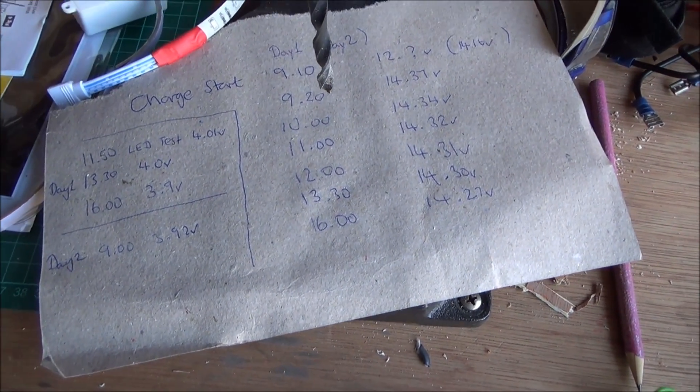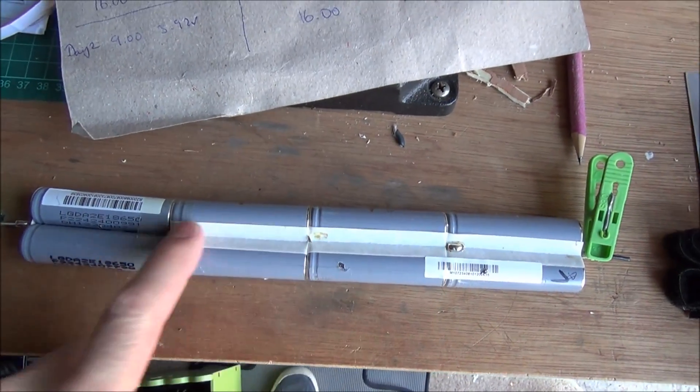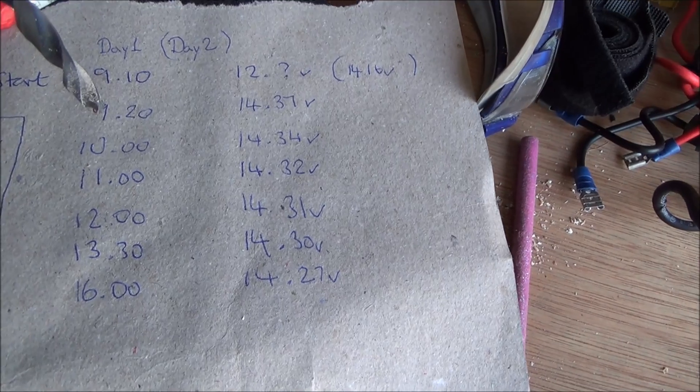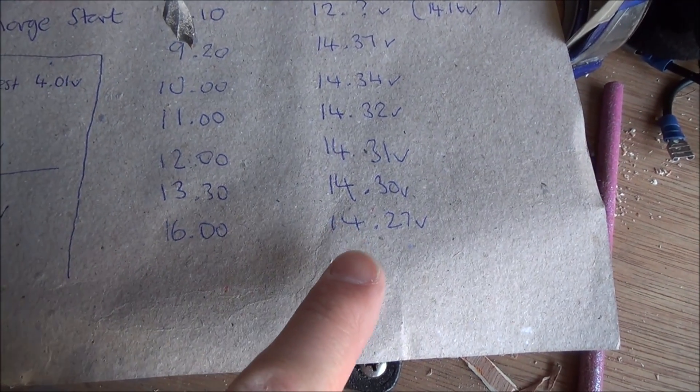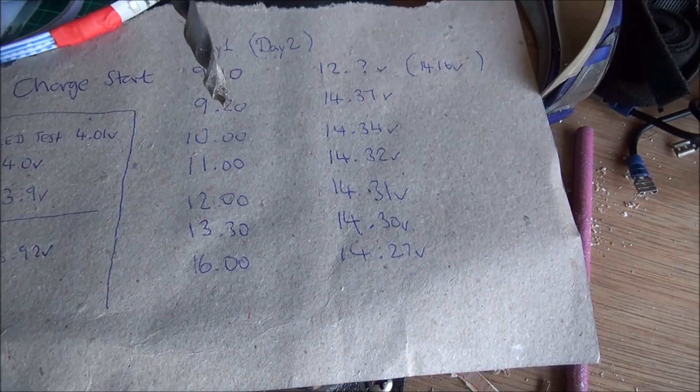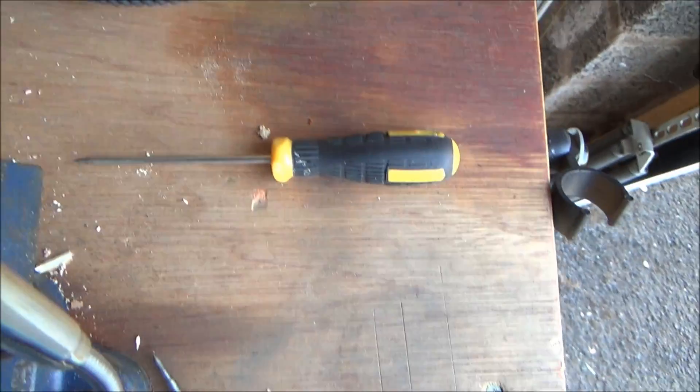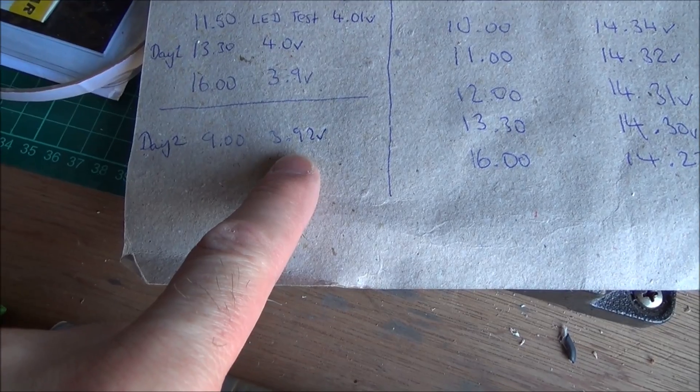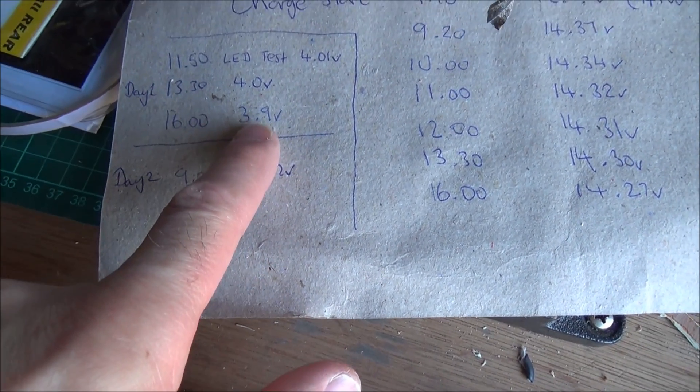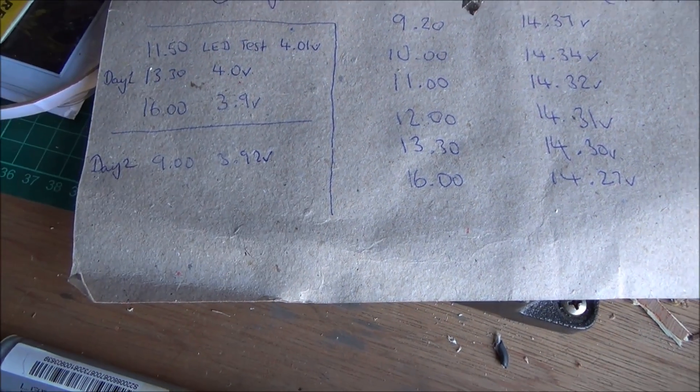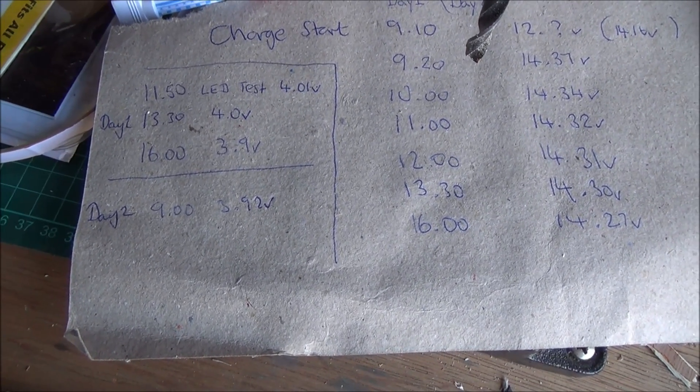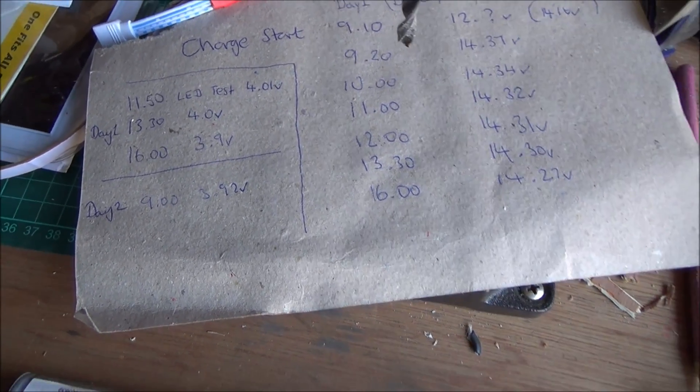Okay, it's day two, battery watch. I've just checked these batteries and 14.16 volts. And at 4 o'clock yesterday it was 14.27. So yes, it's dropping, but it's still 14 volts. And this battery here, the light's still on. And that's now at 3.92 volts. And at 4 o'clock yesterday it was 3.9 volts. It's probably the same actually. So that's not changed much either. So we're doing quite well.